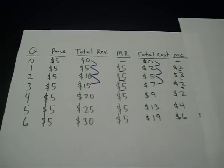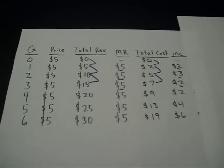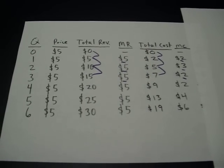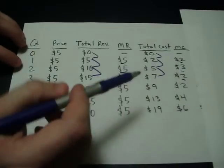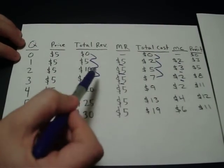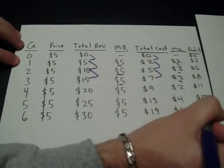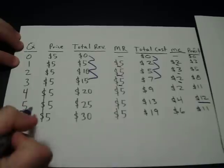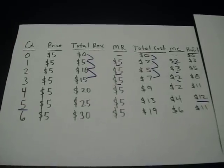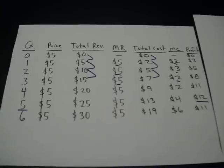Economists always say that you make decisions at the margin. You think about marginal cost and marginal revenue when deciding if you should produce one more. The gap between total revenue and total cost gives us profit, and we can see that profit is maximized when they produce five units. The business's main idea is to maximize profits, but we could also use the rule where MR equals MC to make this decision.